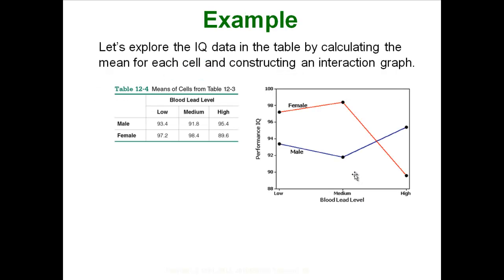In order to test that, you just do a simple interaction plot. The dots represent the averages of each group. The female group in the low lead blood level had an average of around 97, the medium group had a higher average, and the high group had an average way down. When testing for an interaction, the two lines — male and female — should be roughly parallel, and if they are, there is no interaction.